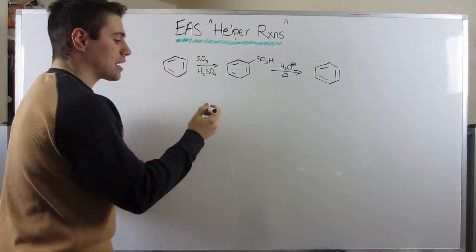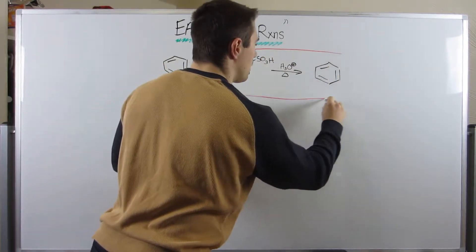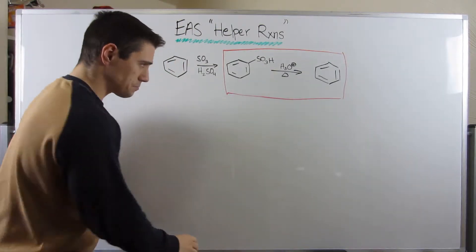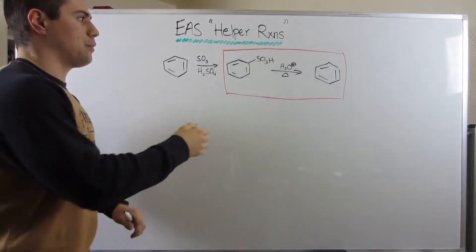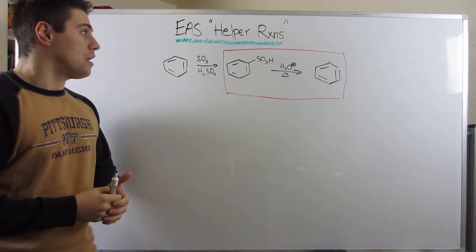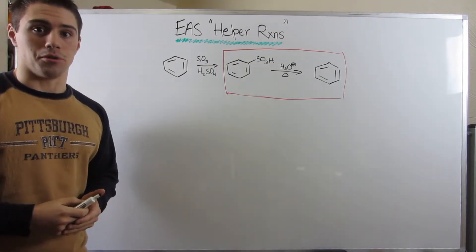However, the reaction we're talking about in this video, if we have a sulfonyl group at all on our benzene ring, any one at all, and we threw in some acid and we cranked up the heat, we have a delta symbol, well, what that does for us is that completely removes this SO3H group.